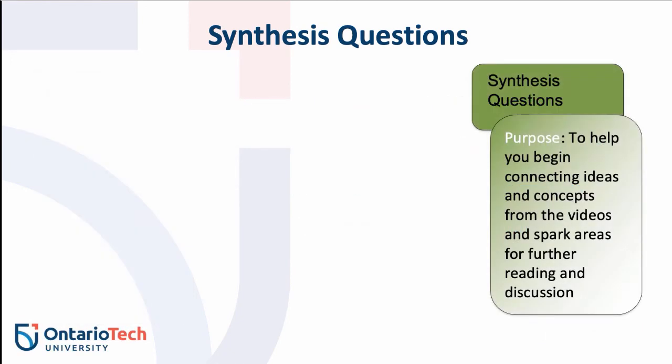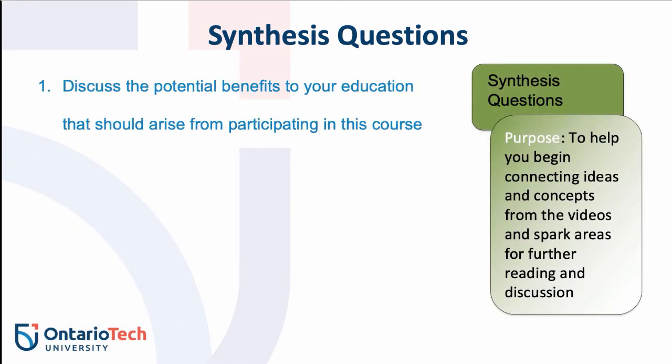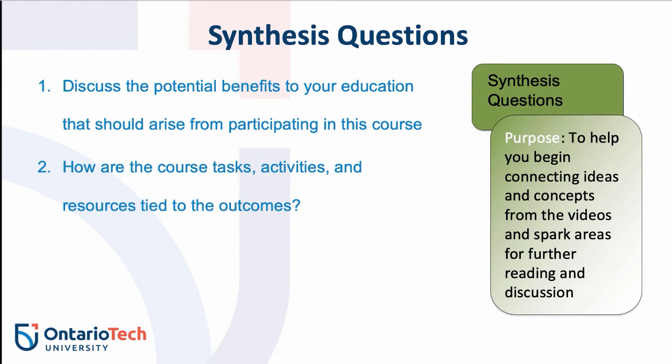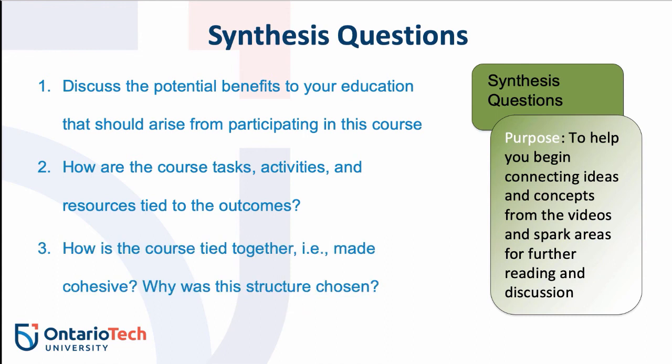The first synthesis item asks you to discuss the potential benefits of your education that should arise from participating in this course. The second question is: how are the course tasks, activities, and resources tied to the outcomes? The last question has two parts: how is the course tied together — referring to its flow and cohesiveness — and why do you think this structure was chosen? I hope these three questions will help you understand and begin thinking about the design of workplace learning.